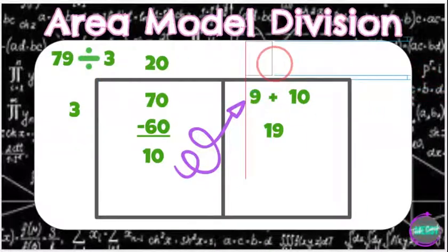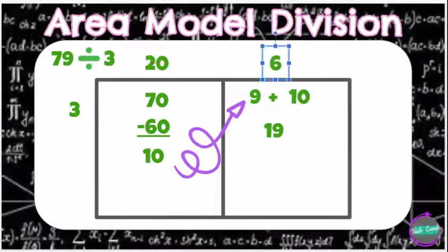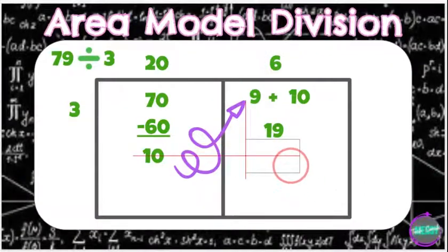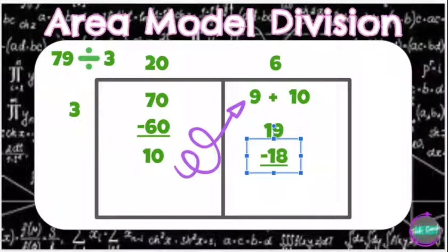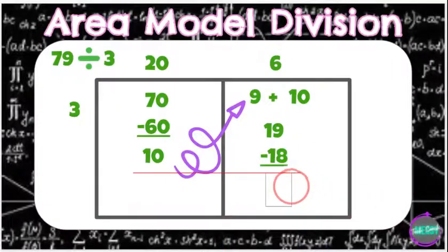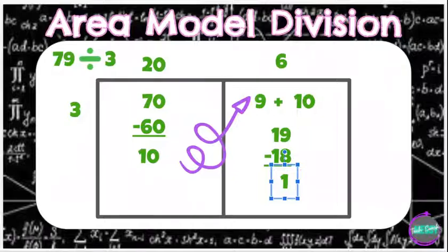And I know 3 times 6 is 18. So my 6 is going to go on the top, and my 18 is going to come down here, and I'm going to subtract it from 19, giving me an answer of 1. And that 1 is going to become my remainder. Don't forget about your 1.